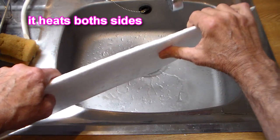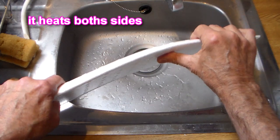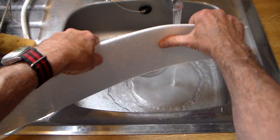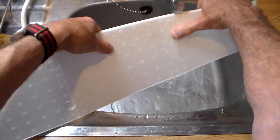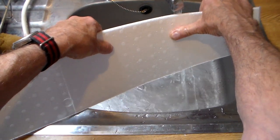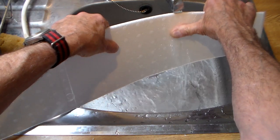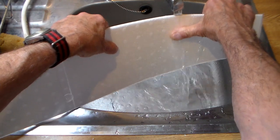Straighten it up and run it under cold water. And as I said before, an overbend is useful because it tends to spring back. So I think this works better.